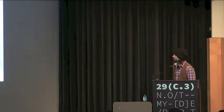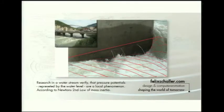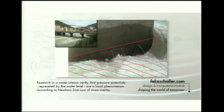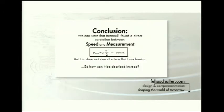Natural research on streams shows that pressure levels are highly relative to location within the stream. Due to inertial movement of mass, you do not have equal pressure levels — only where inertial mass allows it. In conclusion, Bernoulli found a direct correlation between speed and measurement, but it does not describe true fluid mechanics.